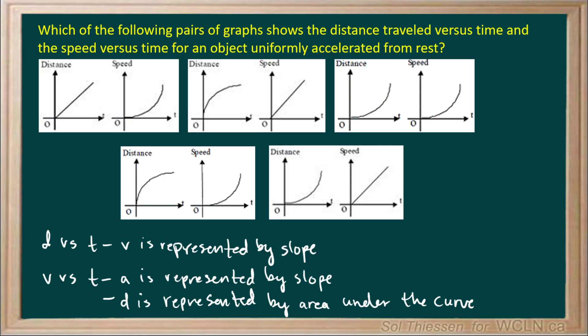On our first distance versus time graph, we see that the slope is constant, representing a constant speed. But then on our speed versus time graph, we see a variable speed with a variable slope, indicating a variable magnitude of acceleration. So neither one of these indicates constant acceleration, or uniform acceleration.